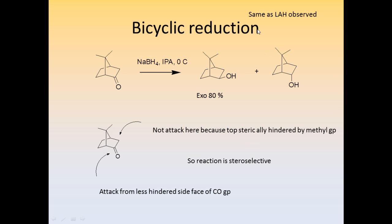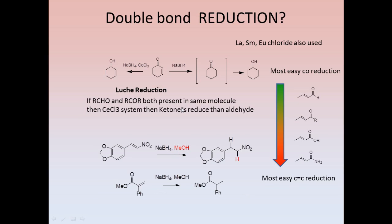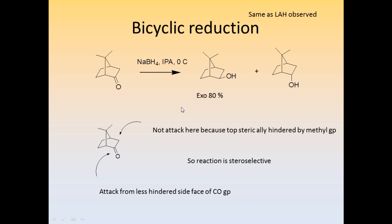Bicyclic selectivity is the same as with lithium aluminum hydride. The hydride attack is not possible from one side due to steric hindrance, so attack is possible from the other side, giving the exo product. Attack from the less hindered site due to the bulky methyl group makes the reaction very stereoselective — only one stereoisomer is formed. Please watch the LAH video for cyclohexanones and bicyclic systems in detail.